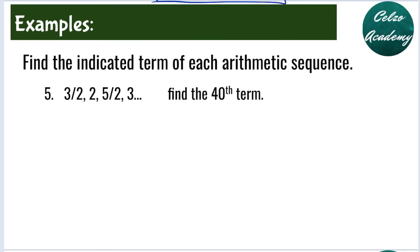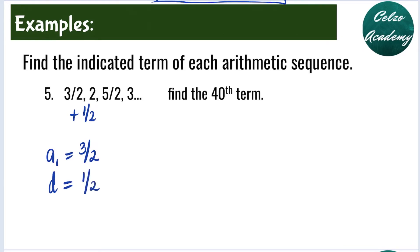Question number 5: given the arithmetic sequence 3 halves, 2, 5 halves, 3 and so on, find the 40th term. In this sequence, our a sub 1 is 3 halves, or 1.5. To calculate d, we do 2 minus 3 halves, or 2 minus 1 and a half, which gives positive 1 half. That means the pattern is adding by 1 half to find the next term, so our d value is 1 half.